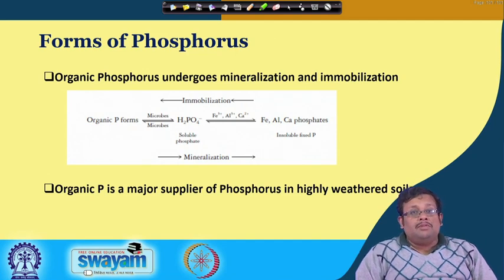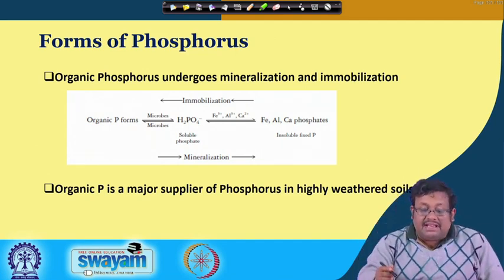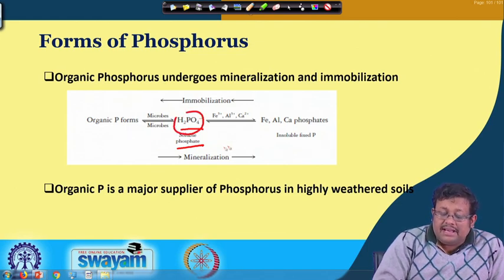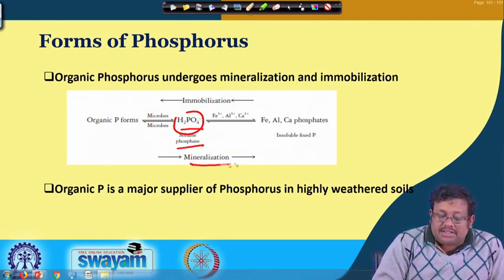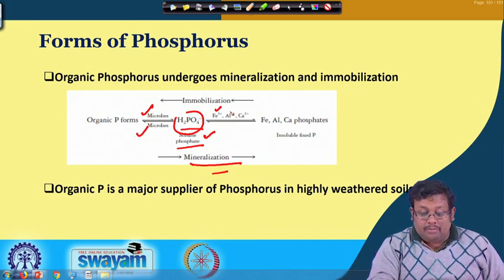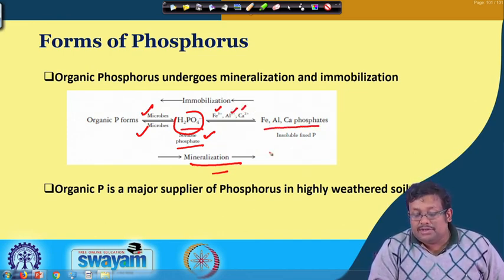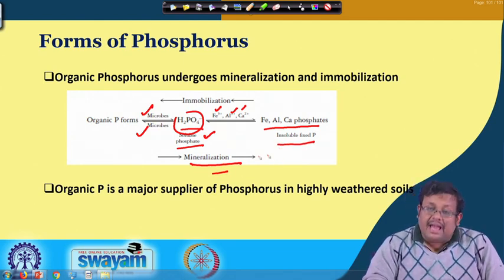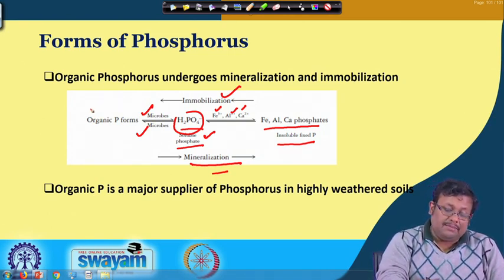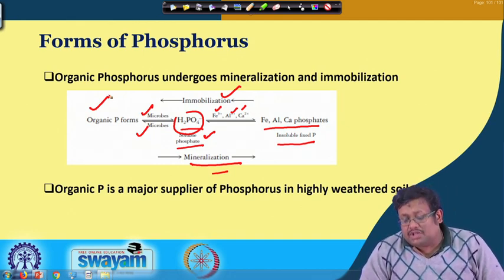Organic phosphorus undergoes mineralization and immobilization. Organic phosphorus forms are converted to H₂PO₄⁻, which is soluble and the available form of phosphate. This conversion of organic phosphate to inorganic phosphate is called mineralization and is mediated by different microbes. Once H₂PO₄⁻ is formed, it gets fixed by either iron, aluminum, or calcium to form iron-aluminum and calcium phosphate, which are insoluble and fixed. Organic P is the major supply of phosphorus in highly weathered soil.